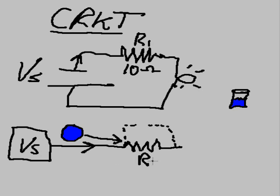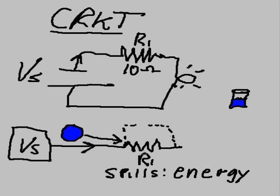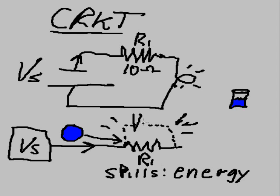What does it do when it hits this resistor — Resistor 1? It spills a lot of its energy out. It spills it, and it gets lost — or it dissipates. It spills it out on this resistor and gets lost in the form of heat. Those funny lines represent the heat. When it spills this energy out, we call that a voltage drop. That's a V — the voltage drop across R1. That means it spills energy across resistor number one. Vr1 is an energy spill.